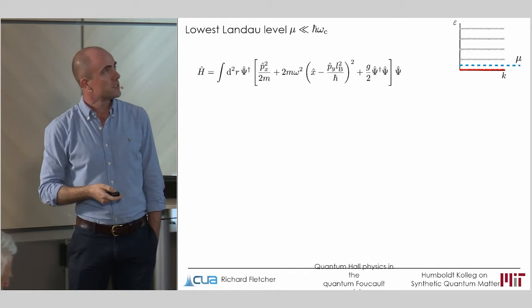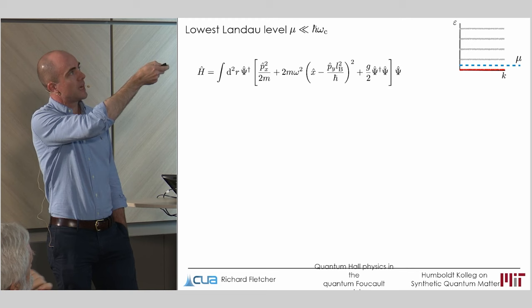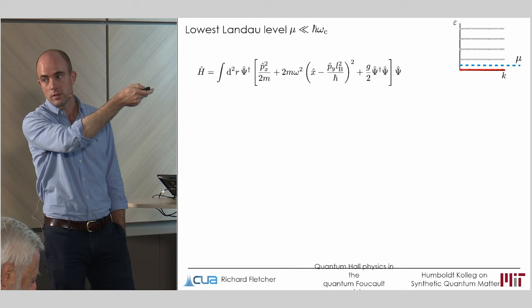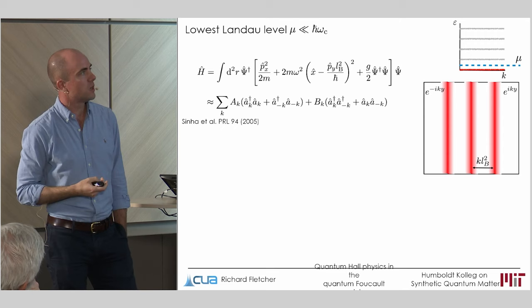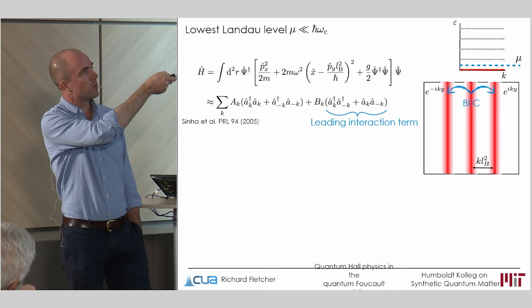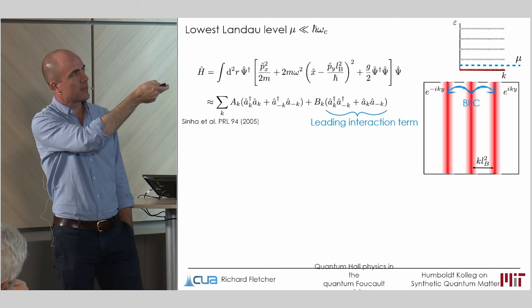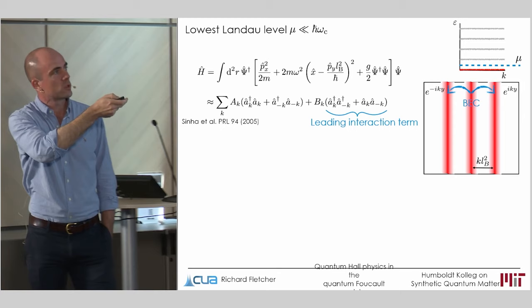And so to understand what's going on, it's helpful to think about different limits. So we can first turn to the case that the chemical potential is much smaller than the cyclotron frequency, which means all particles are confined to the lowest Landau level. And so it's convenient then, you can take your full Hamiltonian, you can just project into the lowest Landau level, perform a Bogoliubov approximation, and what you end up with is a generic bosonic quadratic Hamiltonian. And this, of course, contains terms of two forms. There are terms that look like a dagger a. This is some kind of energy cost. And there are also terms that take the form a dagger k, a dagger minus k. In this case, a_k and a dagger k, these are operators which create or destroy a boson living inside a Landau gauge wave function labeled by wave vector k along the y direction.